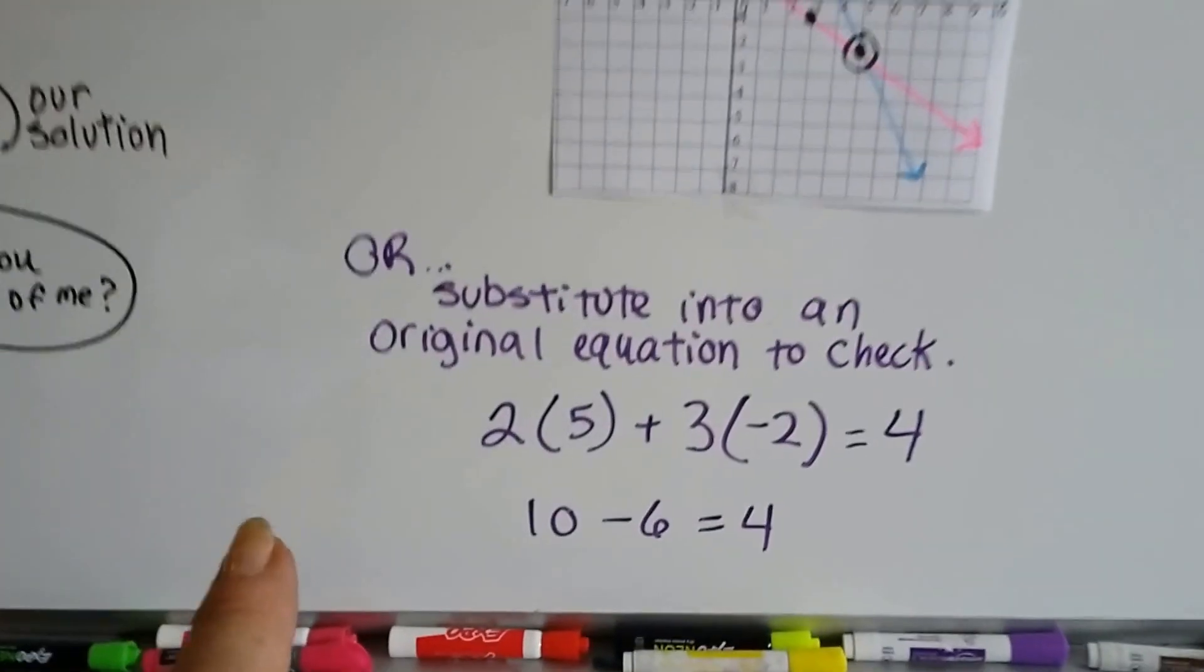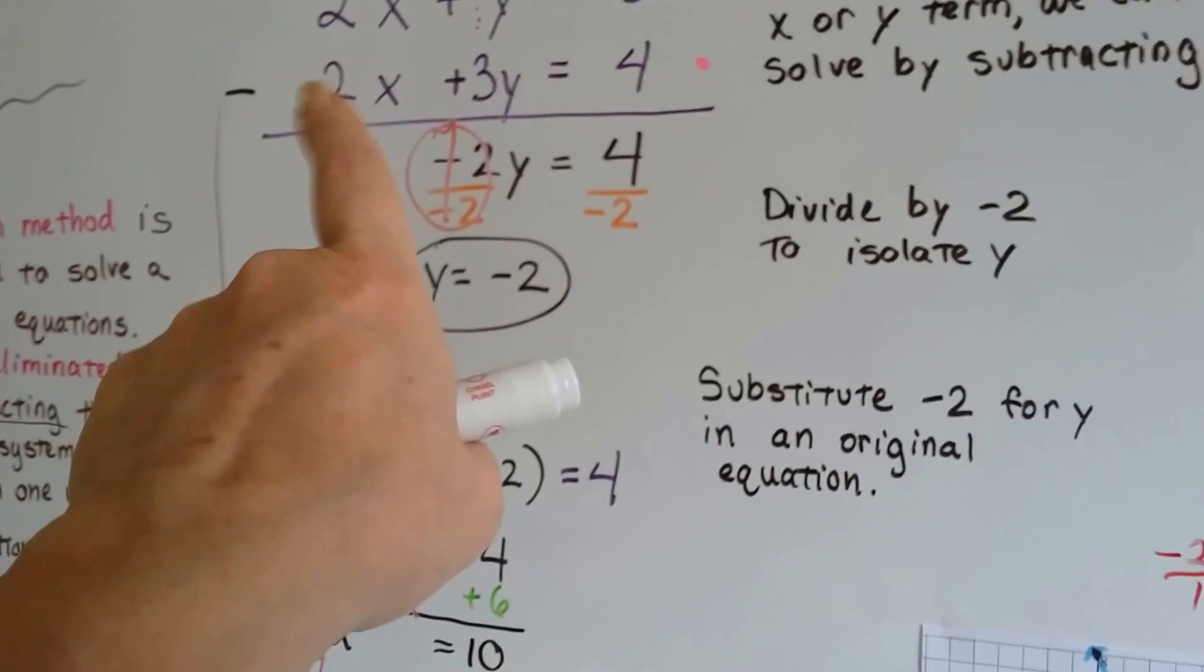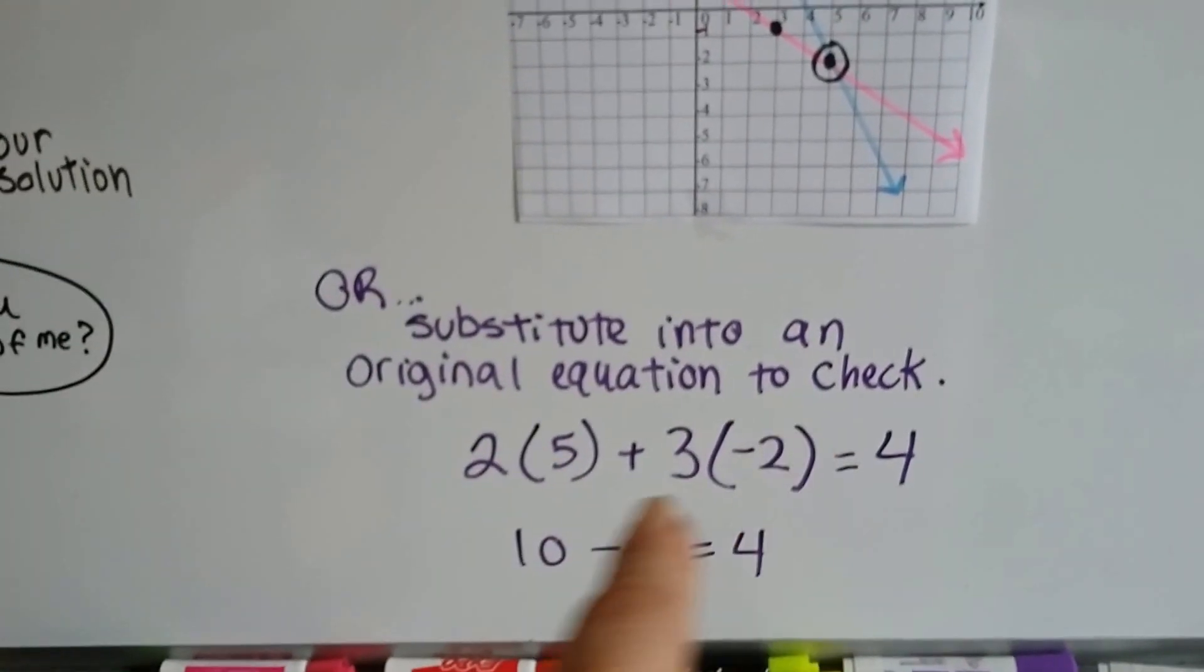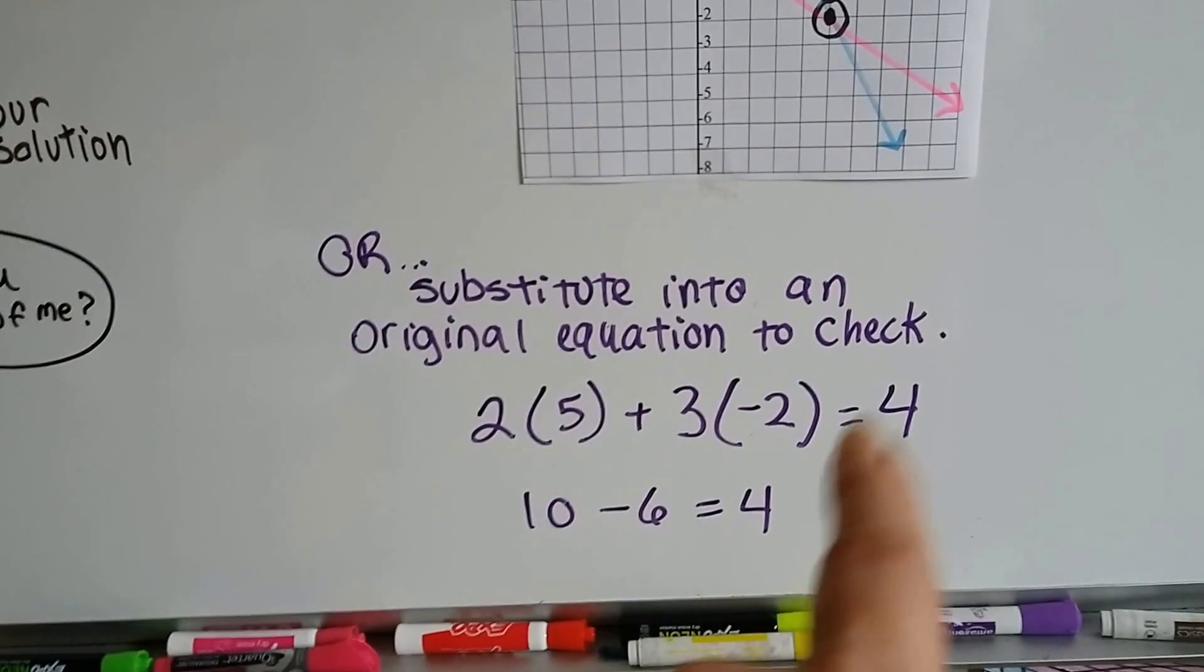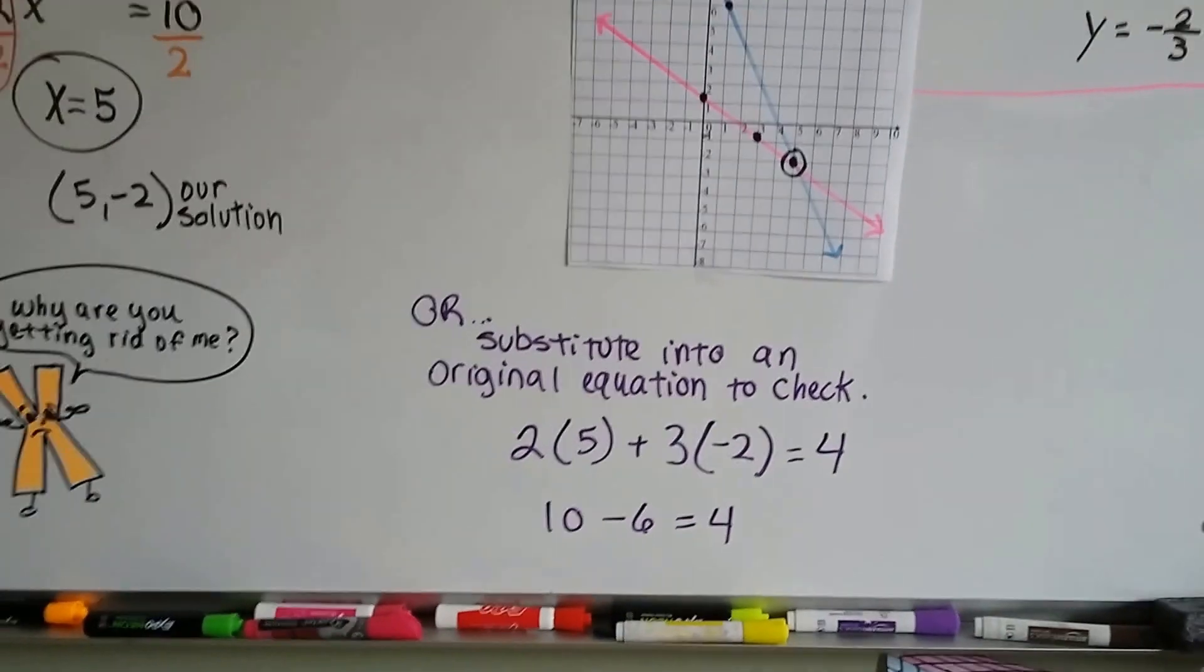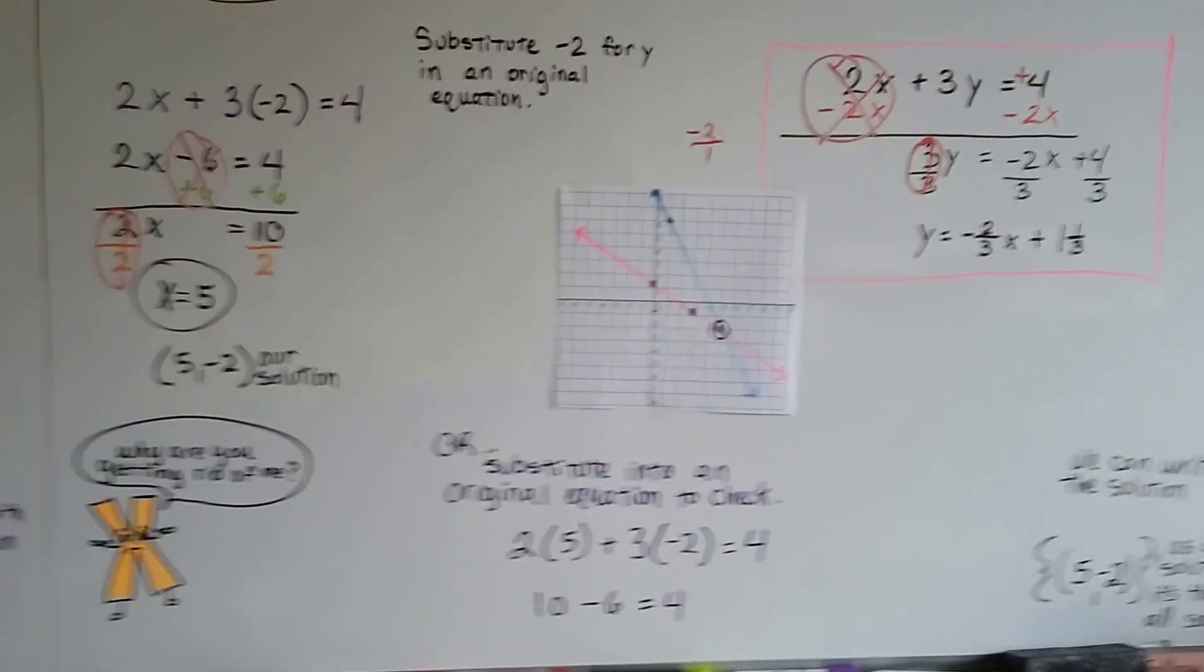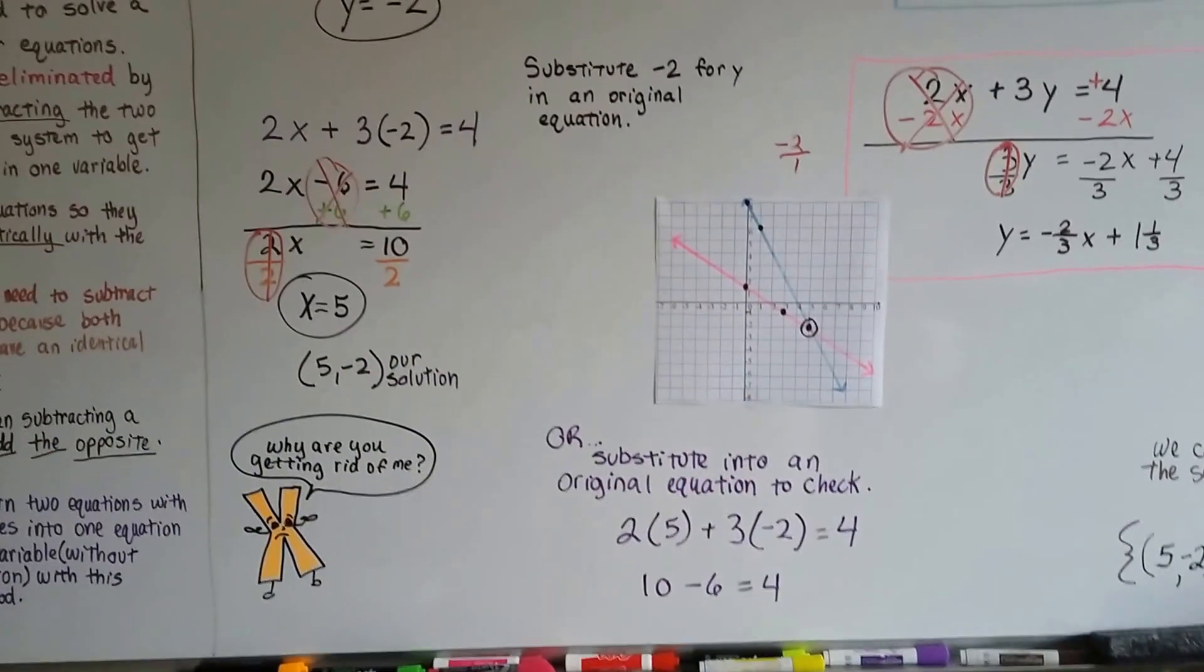And we can also substitute it into an original equation, the 5 and negative 2. So if we do this 2x plus 3y equals 4 and plug in our 5 and negative 2 for our x and y, we get 10 minus 6 equals 4. And that's true. Now this is actually a better way to check to see if you did it correctly and to check to see if the system is true. Graphing is not the absolute best way to do it. This is the best way to do it. But you still need to know how to do it this way.